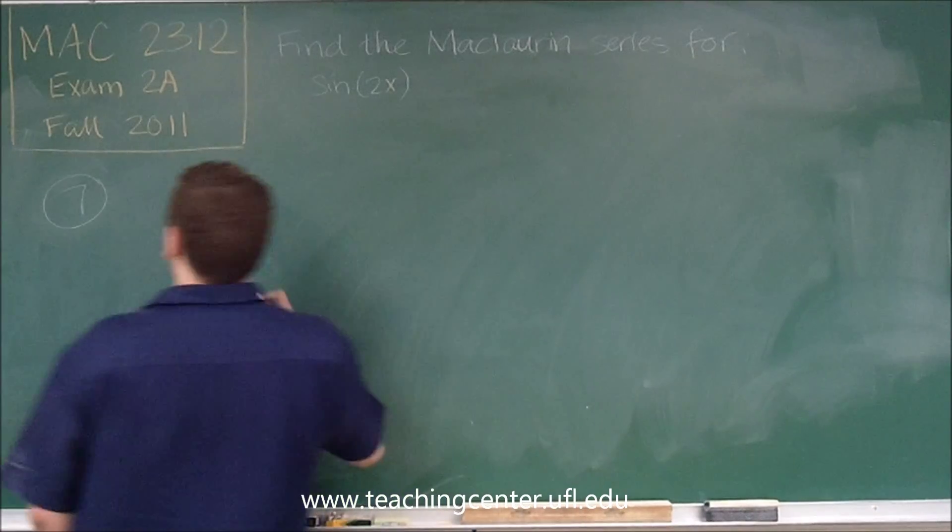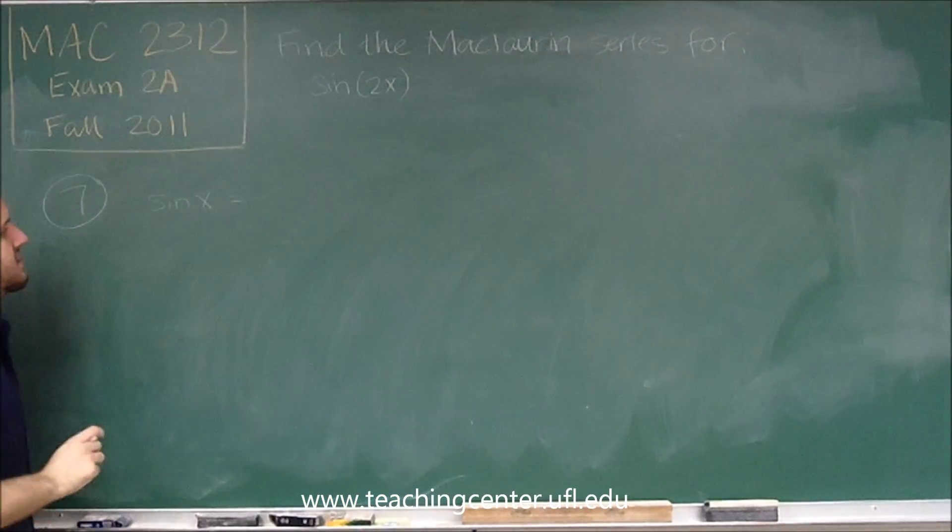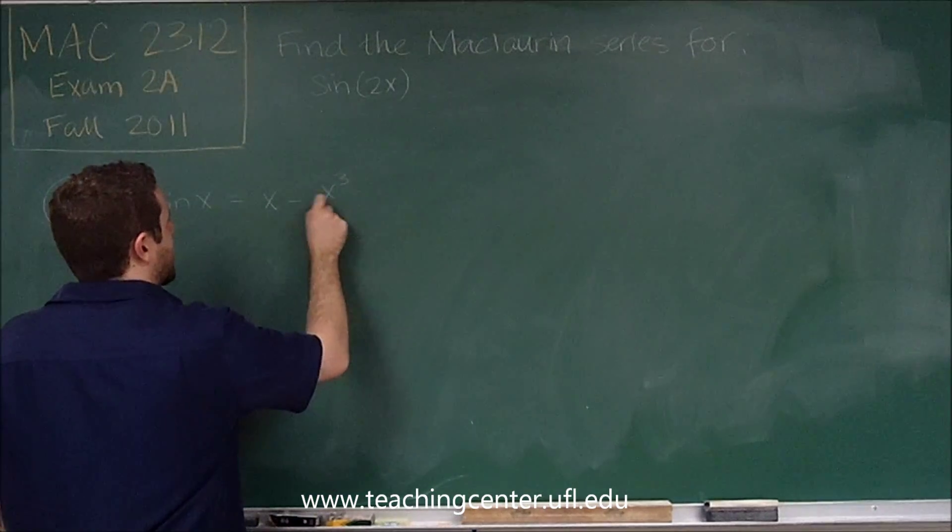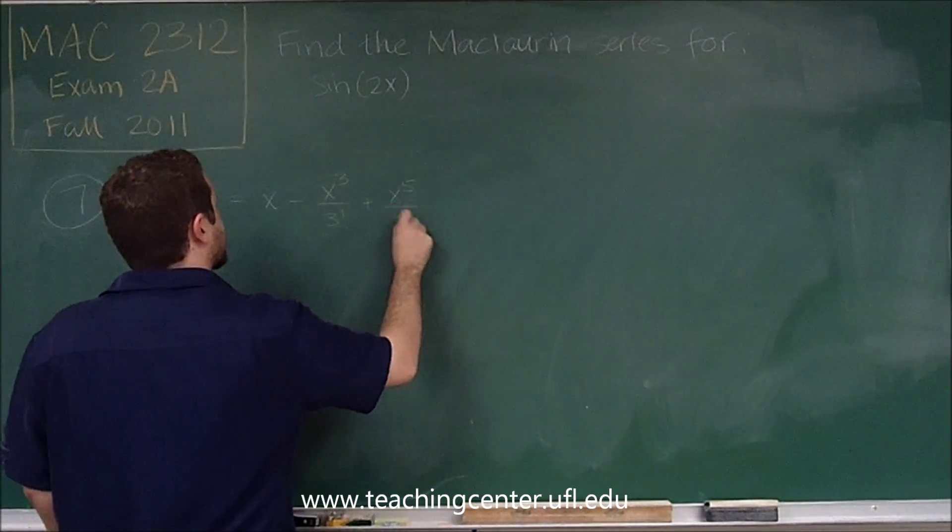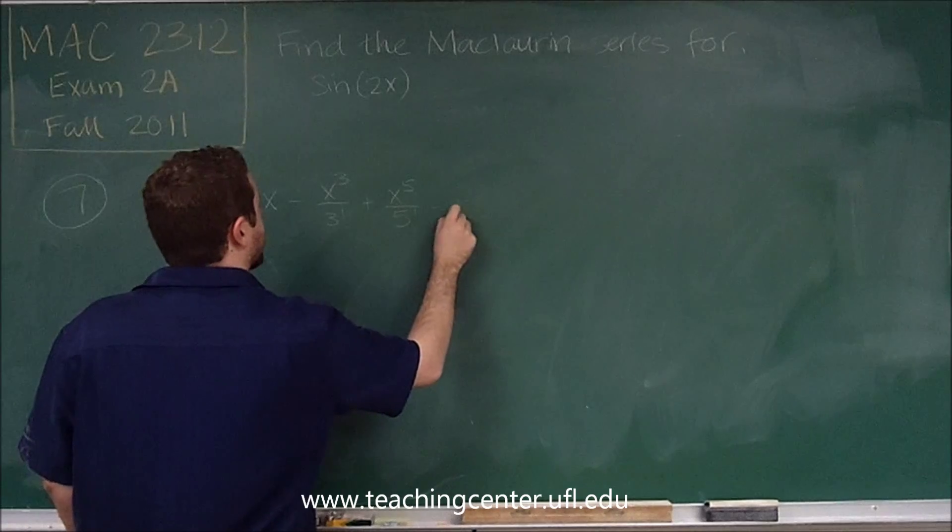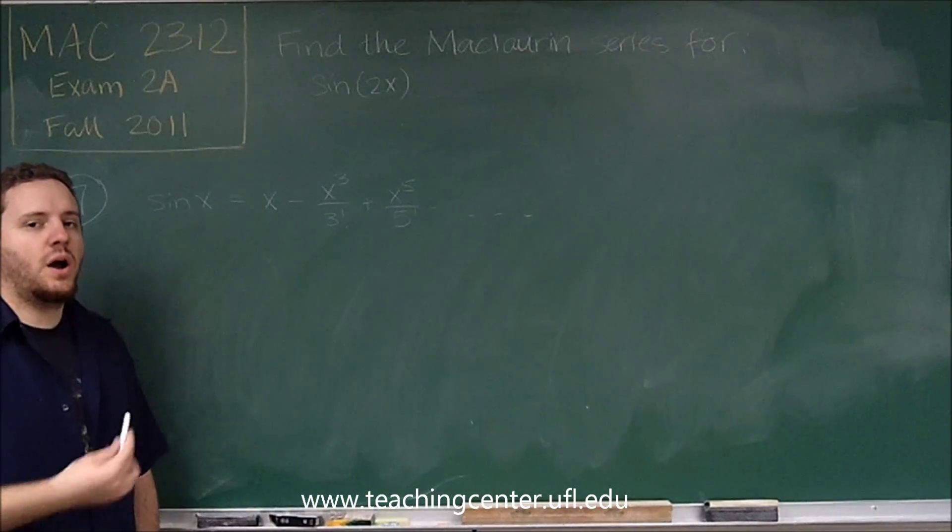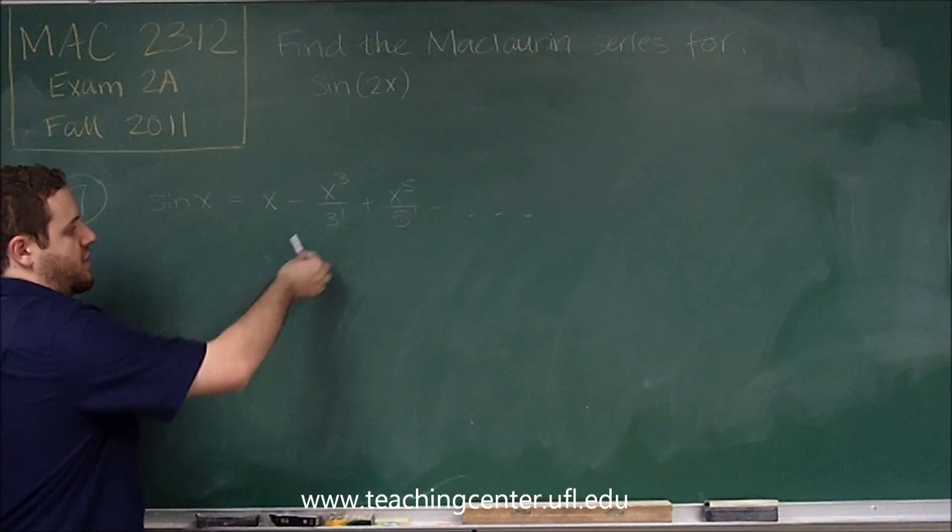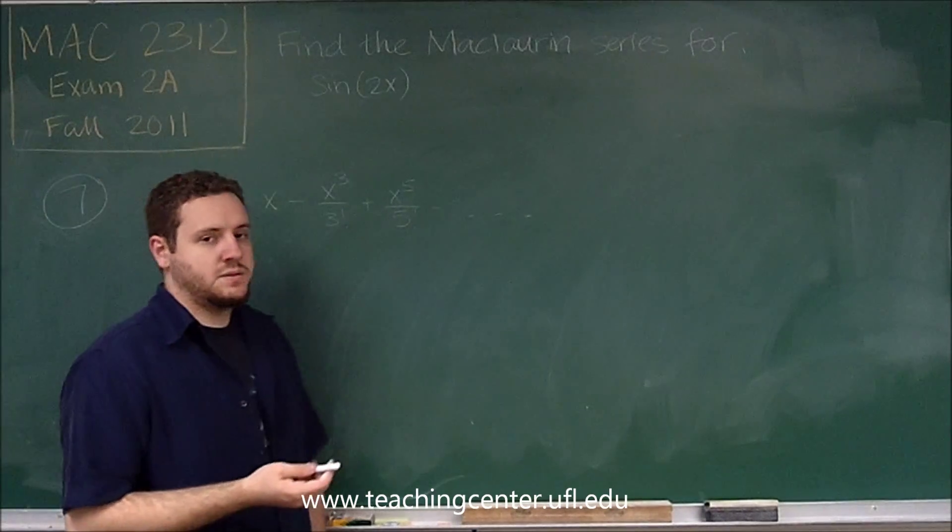So remember that sine x can be written as a series, a McLaurin series, in the following way. You have x minus x cubed over 3 factorial plus x to the fifth over 5 factorial, and so on. So what do you have here? You have odd powers of x, you have an alternating series, and you have the odd corresponding factorials in the denominators.